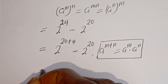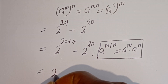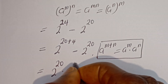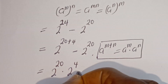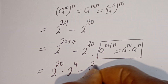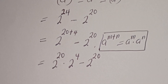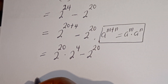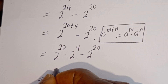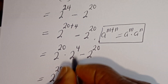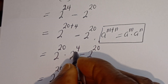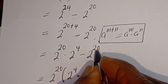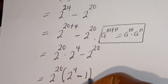This can be written as 2 to the power of 20 multiplied by 2 to the power of 4, minus 2 to the power of 20. Now 2 to the power of 20 is common — let's bring it out. This equals 2 to the power of 20 times bracket 2 to the power of 4 minus 1, which gives 16 minus 1.